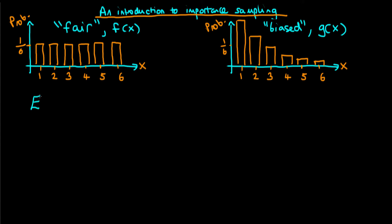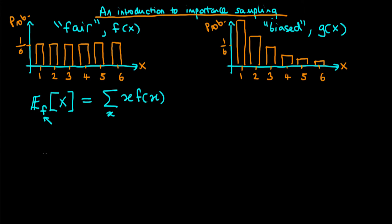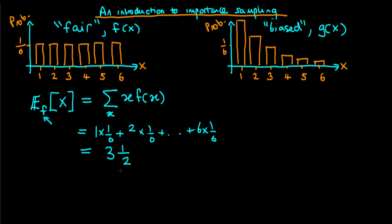For the fair die we can calculate the mean number thrown by taking the expectation of x with respect to f, which is just the sum over all possible values of x of x times f of x. I've put f here to emphasise we're taking the expectation with respect to the fair die. We get one times one-sixth plus two times one-sixth plus dot dot dot plus six times one-sixth, which gives a mean of three and a half.